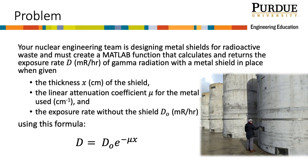Let's work on a problem within an engineering context. Radioactive waste produces gamma rays that can potentially damage the DNA in cells of nearby people. Waste must have shielding to reduce exposure to gamma rays while transporting radioactive waste to storage facilities. Your nuclear engineering team must create a MATLAB function that calculates and returns the exposure rate d in millirentgen per hour of gamma radiation behind a metal shield, using the formula d equals d-naught times e to the negative mu times x.